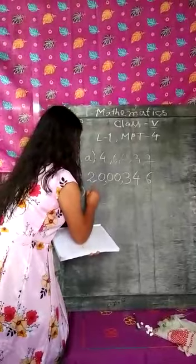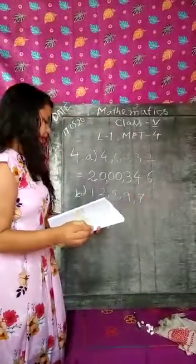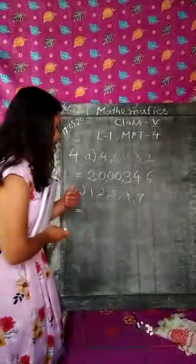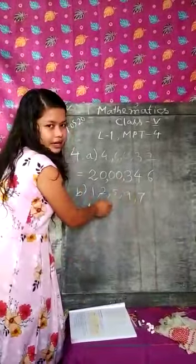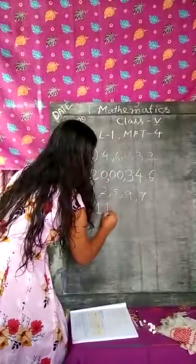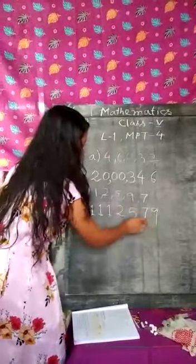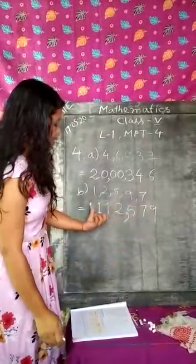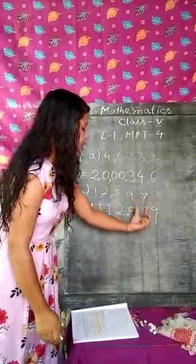Now see question number B. The digits are 1, 2, 5, 9, 7. The smallest digit is 1, so we will repeat the number 1. Here there is no 0, so we can write 1 at first. There are 5 digits total and we have to make a 7 digit smallest number, so we repeat 1 two more times. Then 2, 5, 7, 9. So the smallest 7 digit number with these digits is 11,12,579.